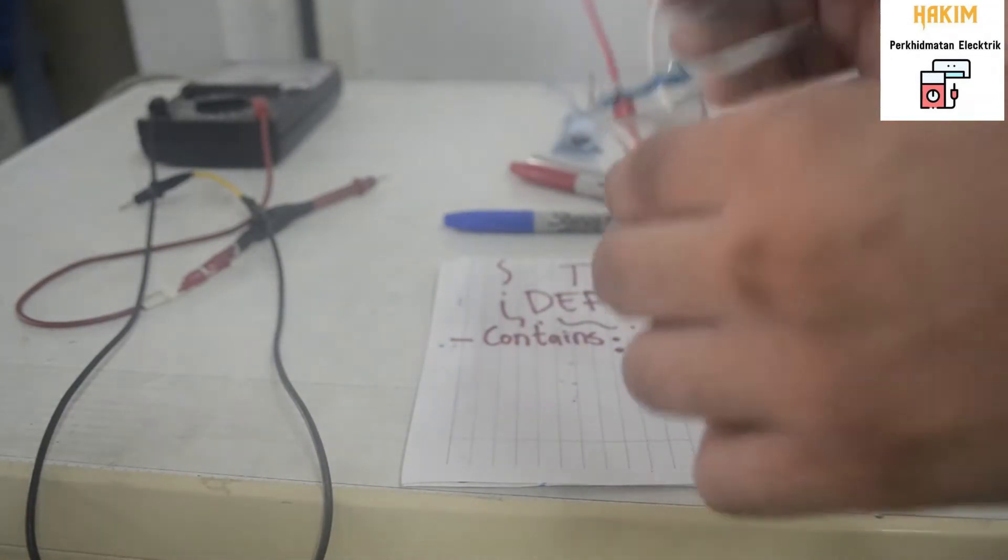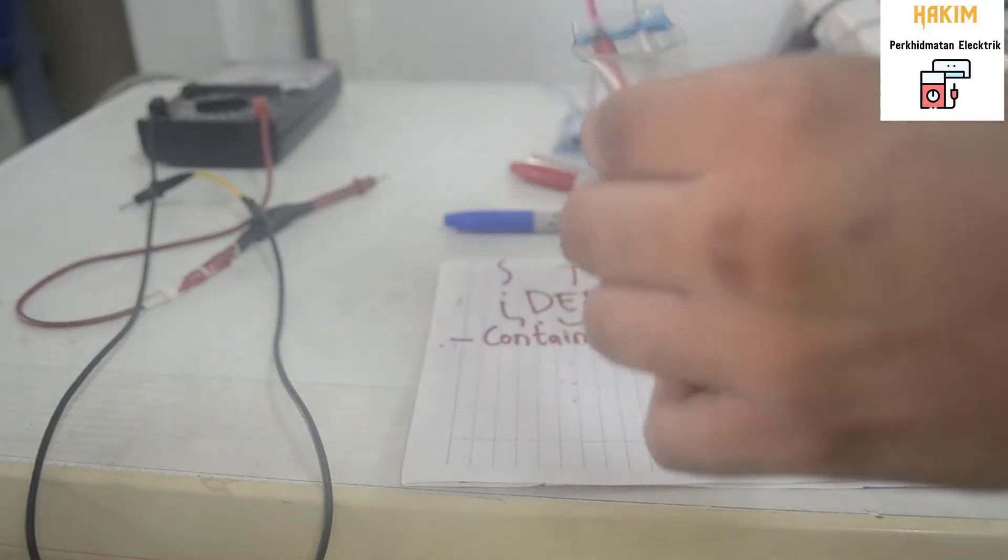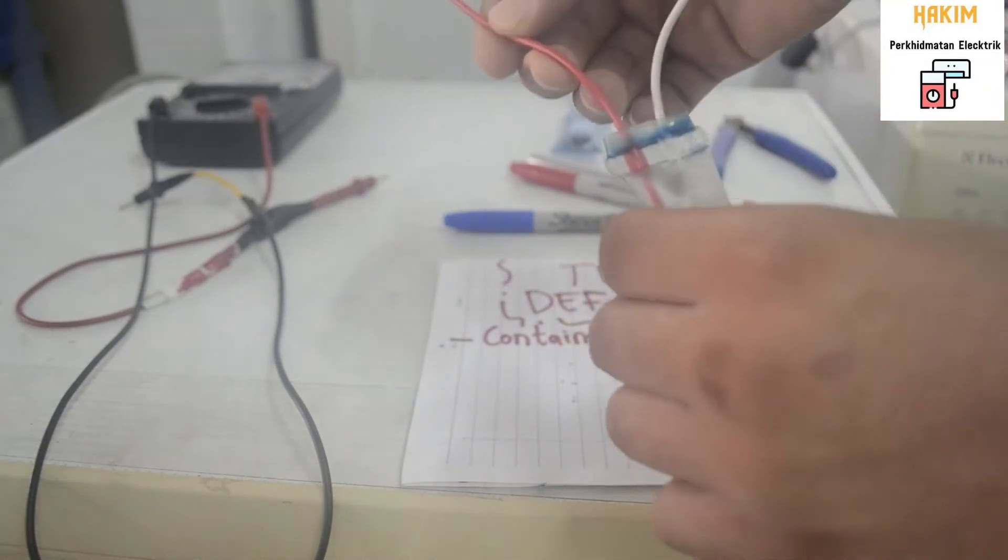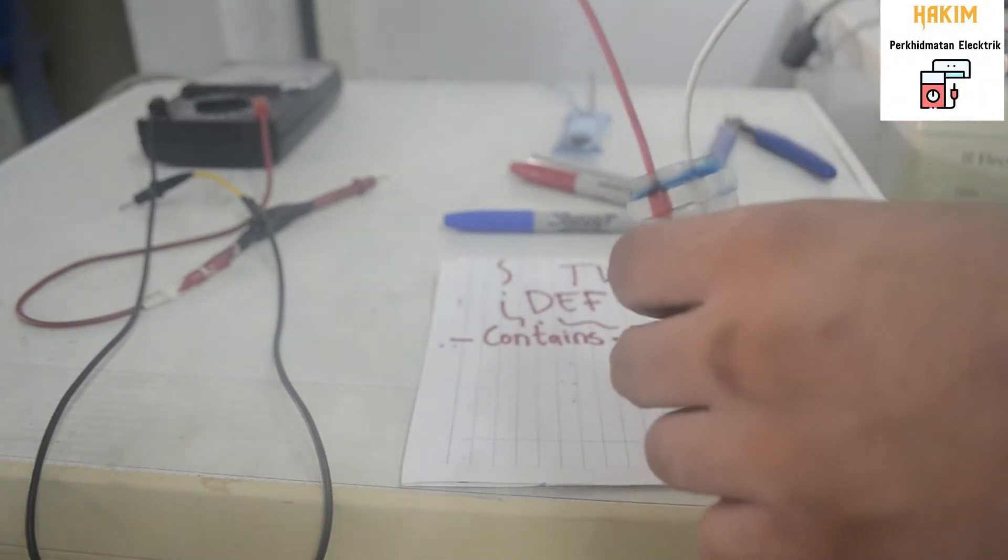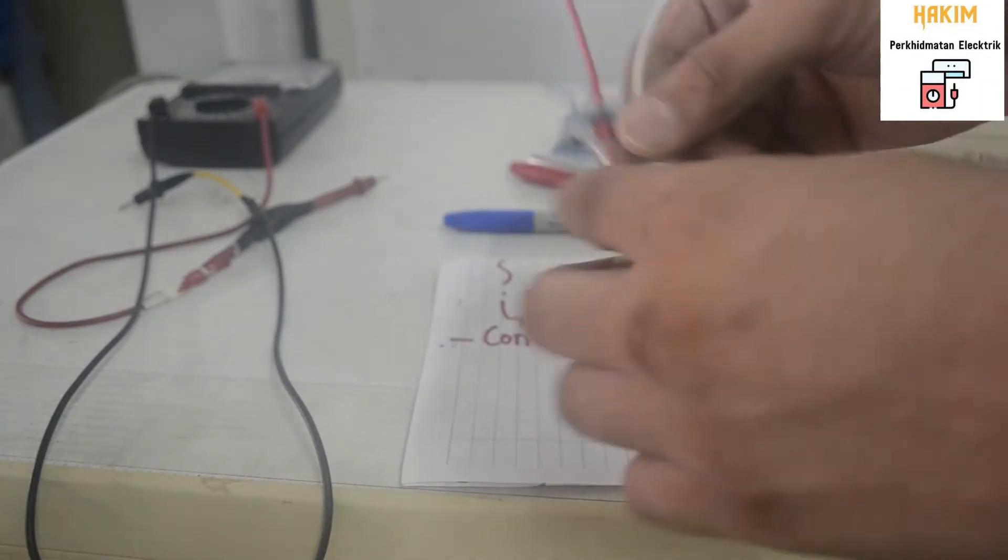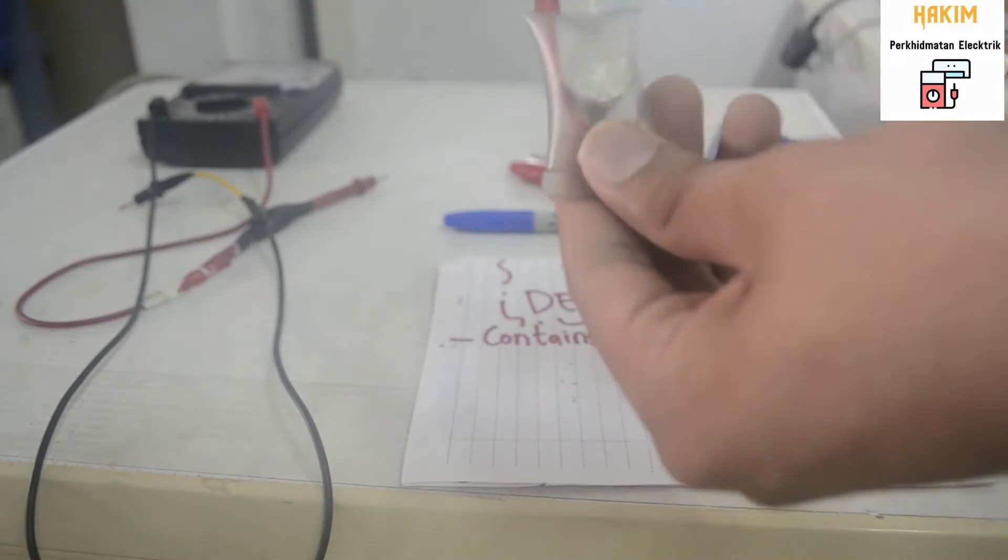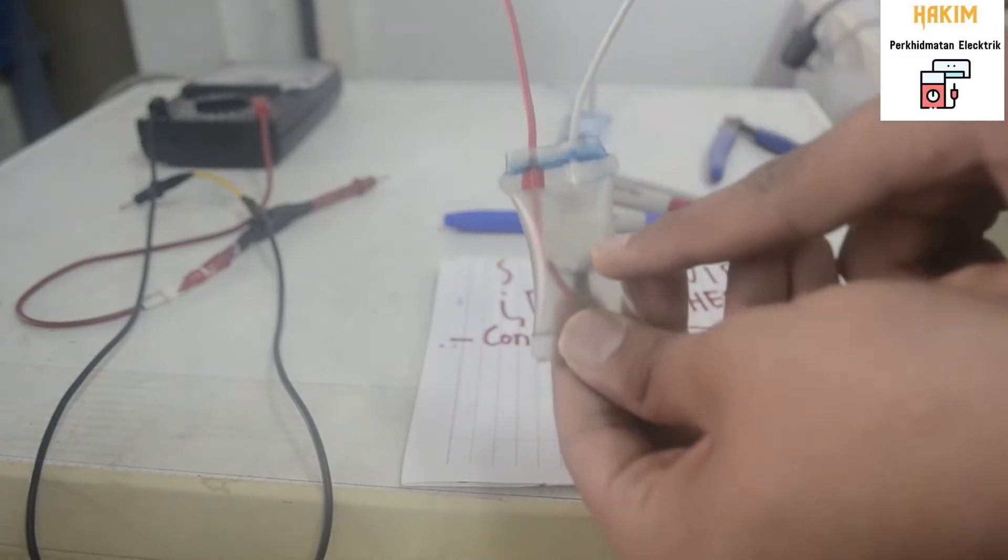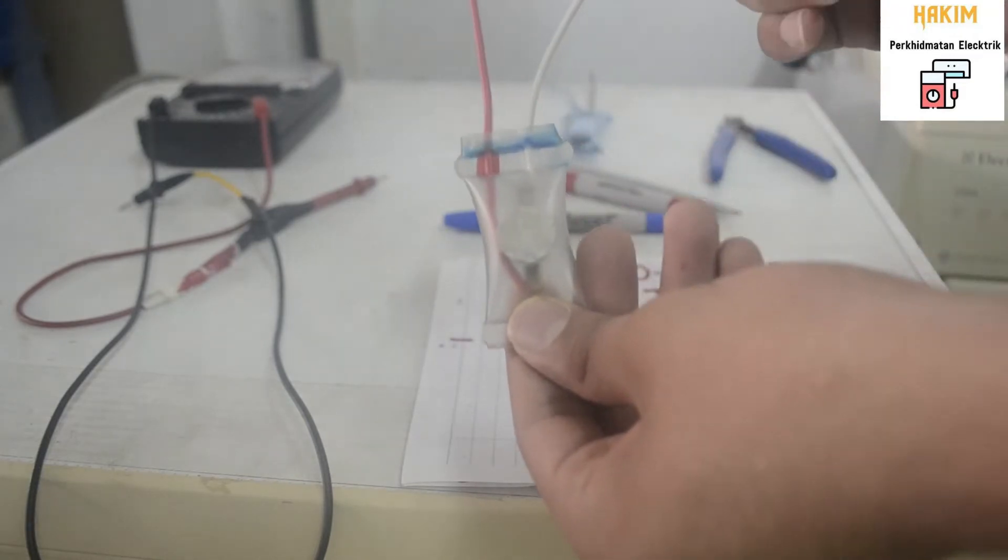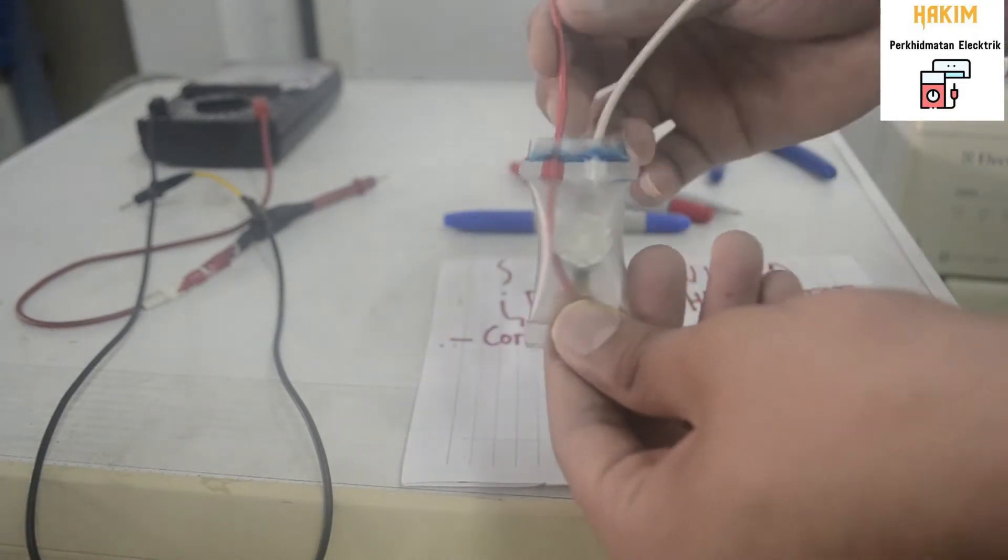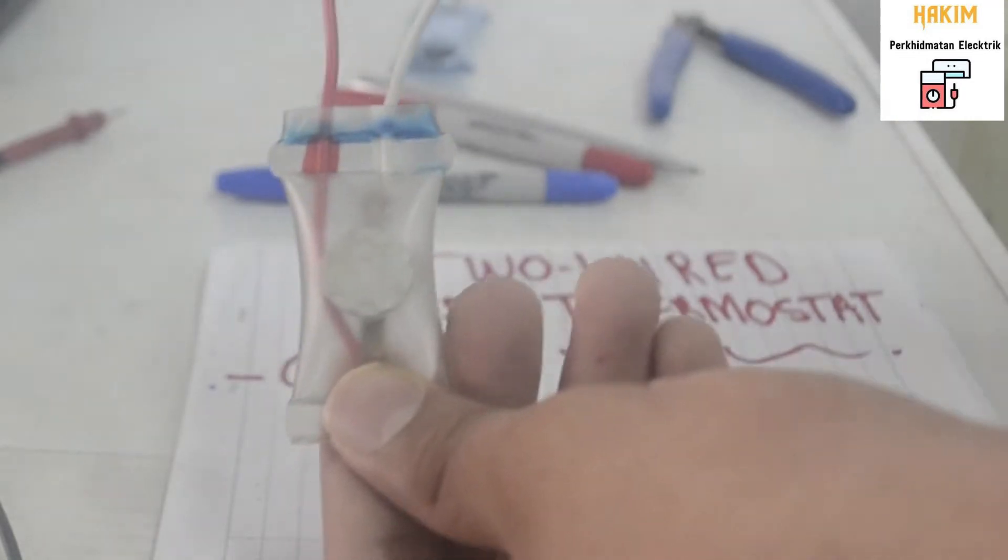So this temperature sensor gives signals to the heater. So this wire is usually connected to the heater, one of the wires from heater, when to turn on and when to turn off. So the defrost thermostat gets the signal from the white wire, and from the red wire, it gives out the signals to the heater.